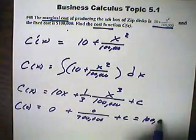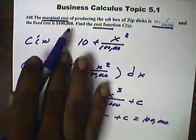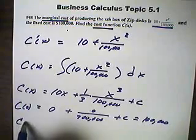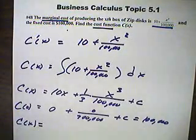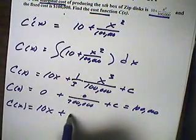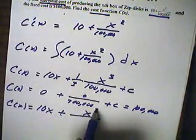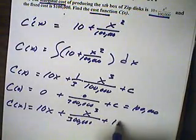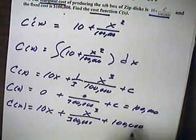So C is going to equal this. So we know that the cost function is 10x plus x cubed over 300,000 plus 100,000.